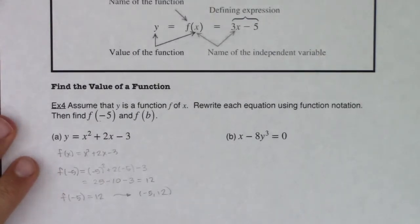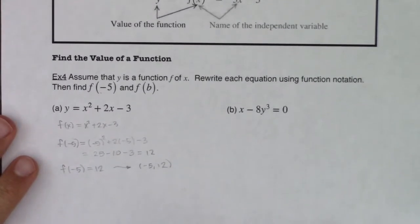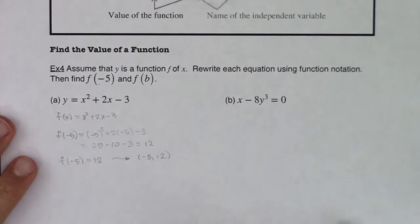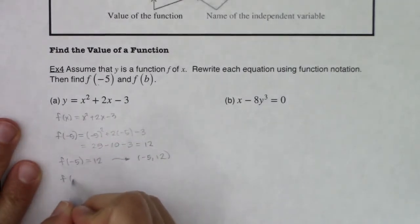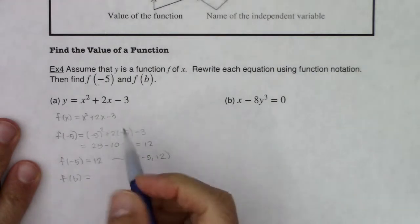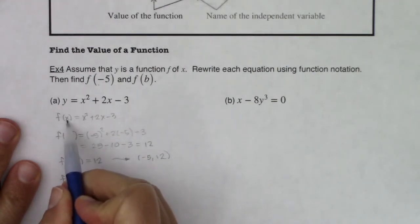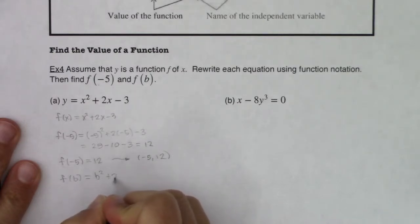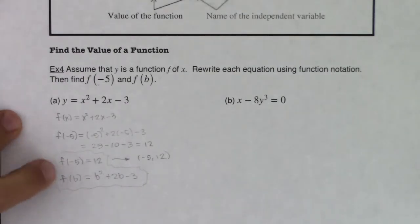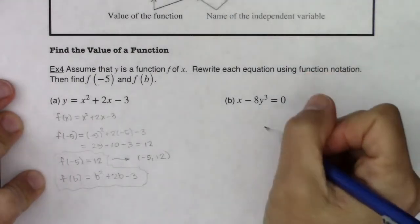I'm going to scoot this up some more so I can calculate f of b. That's the next direction we have. So I found f of negative 5, now I need to find f of b. So this will be b squared plus 2b minus 3. These two function values are my answer. I've found f of negative 5 and I've found f of b.